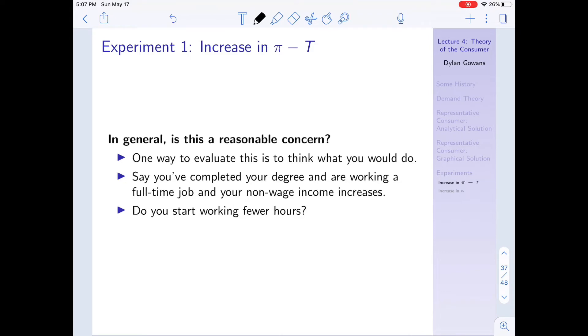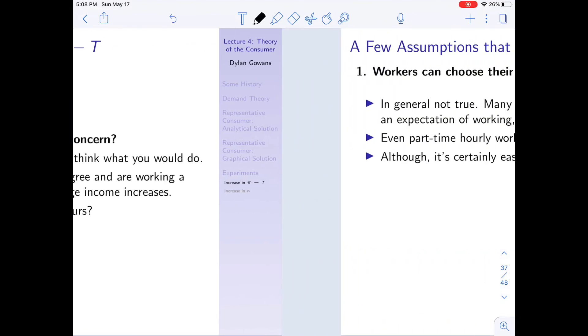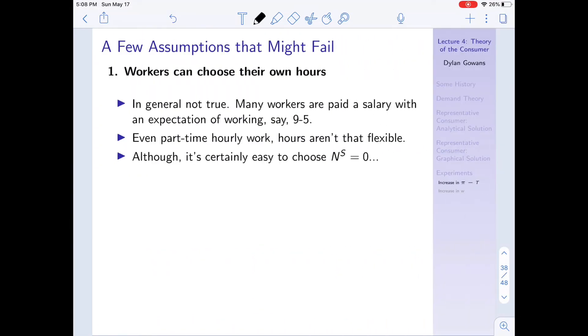So I don't know, let's say that you have some investments and suddenly they start doing very well and you start getting more money. Or alternatively, let's say that the government has some kind of rebate check that they've started giving you. What do you do? Would you start working fewer hours? This is a good way to evaluate this claim, right? Think about what you yourself would do.